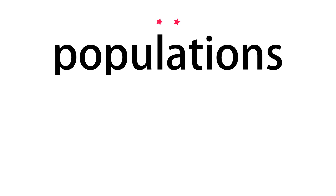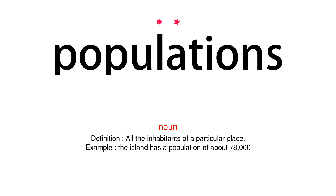Populations. Noun. Definition: All the inhabitants of a particular place. Example: The island has a population of about 78,000.